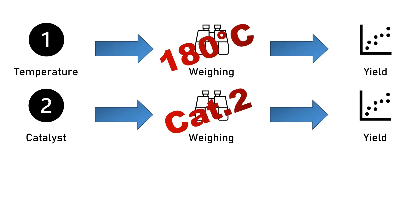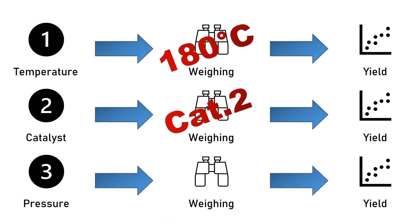You can also change the pressure. You run the same experiments with the previous optimum temperature and previous optimum catalyst, and you find the perfect pressure for your settings to be at 50 bars.